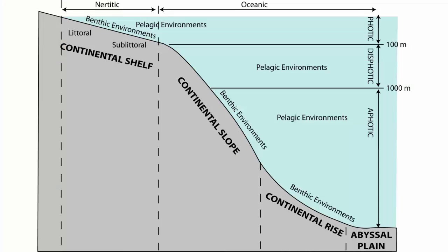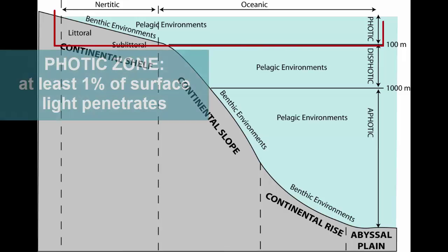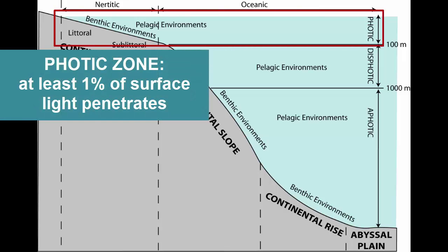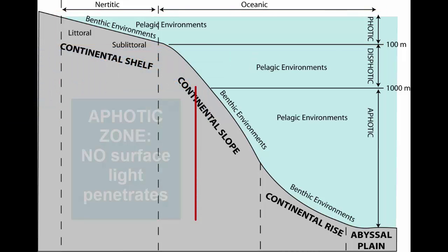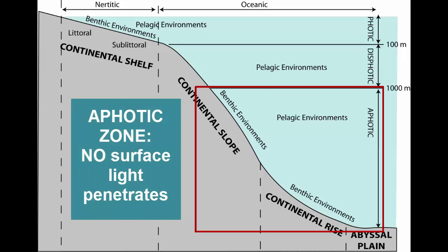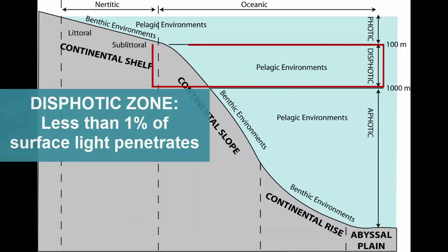This image shows a cross-section across the continental margin. The photic, or euphotic zone, is the area of the ocean's surface where at least 1% of visible light penetrates. Depths below which 0% of visible light penetrates is known as the aphotic zone. Between these two zones — 0 to 1% visible light penetration — lies the dysphotic zone.